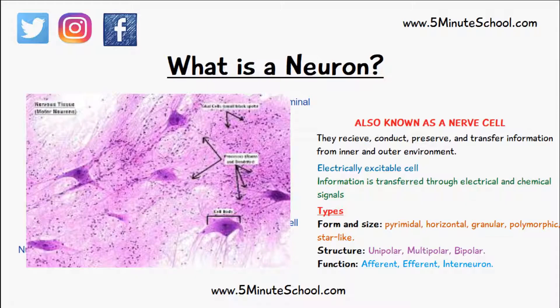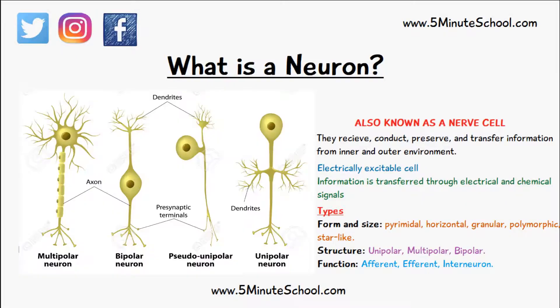When classifying neurons based on their structure, they can either be unipolar, multipolar, or bipolar. Unipolar neurons are basically sensory and they consist of just the axon and the dendrite.